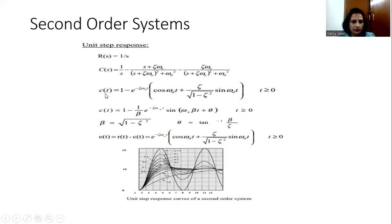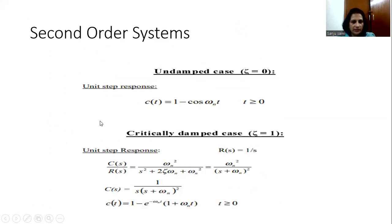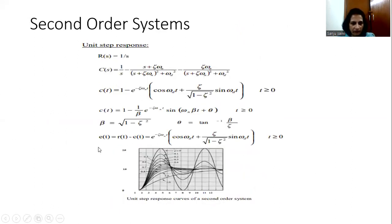When we resolve this into partial fractions, we will get C(s) equal to the corresponding expression, and in order to get the value of the response with respect to time, we obtain c(t) by taking the inverse Laplace transformation. c(t) is represented accordingly, and if we want to get the error, it will be the difference between the reference input and the actual output, given by that expression. The unit step response of a second order system can be represented by this graph.